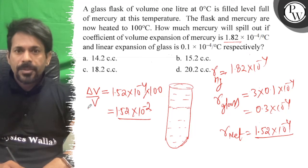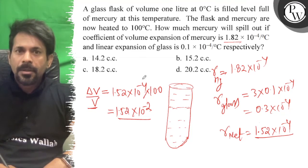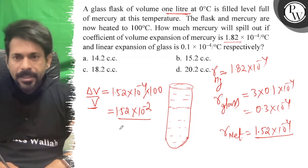Let's see the volume. How much is the volume? How much mercury will spill out? If coefficient of volume expansion, if it is 1 liter, then it is 1 liter.